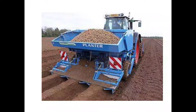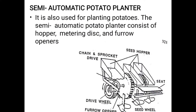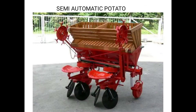Here is the actual working of the potato planter in the field — how it works and what type of beds are prepared and necessary in the field to operate that type of potato planter. Semi-automatic potato planter: It is also used for planting potatoes. The semi-automatic potato planter consists of a hopper, metering dish, and furrow openers. Its parts include chain and sprocket drive, seed hopper, drive wheel, furrow opener, seed wheel, and a seat for the operator.